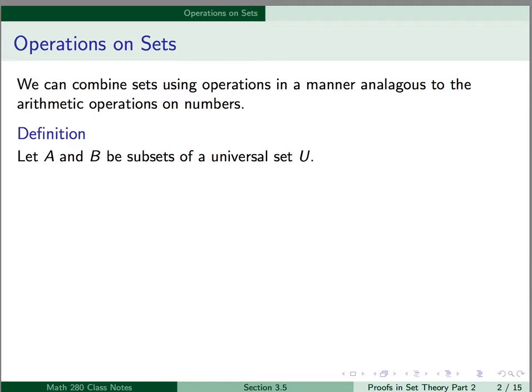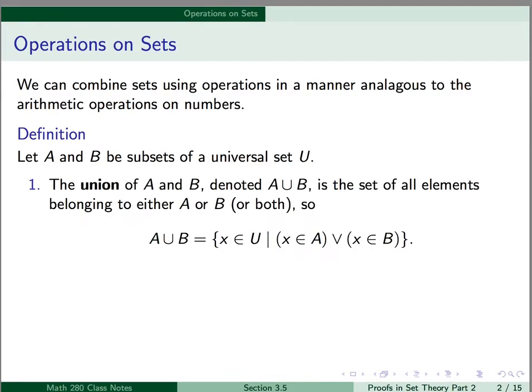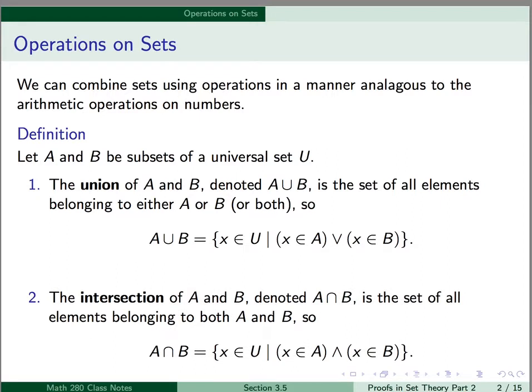Let A and B be subsets of a universal set U. The union of A and B, which is denoted with our union symbol, is the set of all elements belonging to either A or B or both. So in symbolic form, A union B is the set of x in our universal set U such that x is in A or x is in B. The intersection of A and B, which is denoted using our intersection symbol, is the set of all elements belonging to both A and B. So A intersect B is the set of x in U such that x is in A and x is in B.